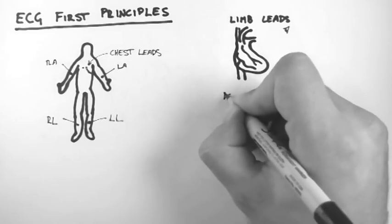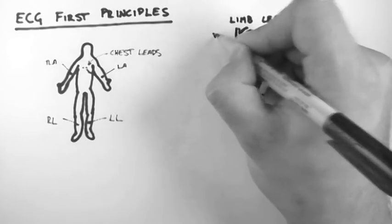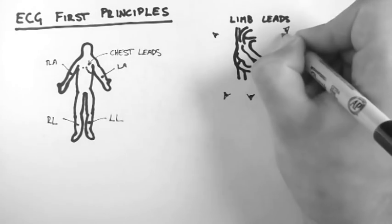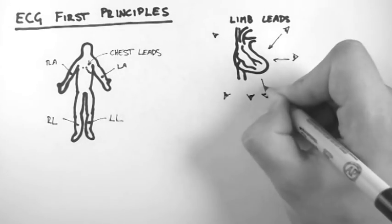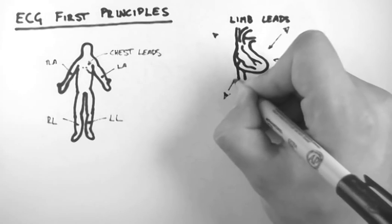So there are six of these eyes that look at the heart in a coronal plane, and they look at the heart in the directions I've shown here.